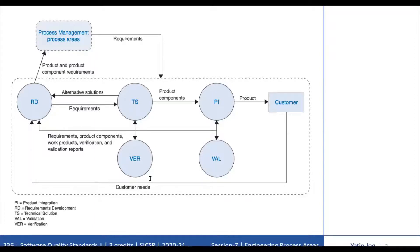The Requirements Development Process Area supplies Requirements to the Technical Solution Process Area, where the Requirements are converted into Product Architecture, Product Component Designs, and Product Components — for example, by use of coding or fabrication. The Requirements are also supplied to the Product Integration Process Area, where Product Components are combined and interfaces are verified to ensure that they meet the interface requirements supplied by Requirements Development. The Technical Solution Process Area develops technical data packages for Product Components to be used by the Product Integration or Supplier Agreement Management Process Areas.